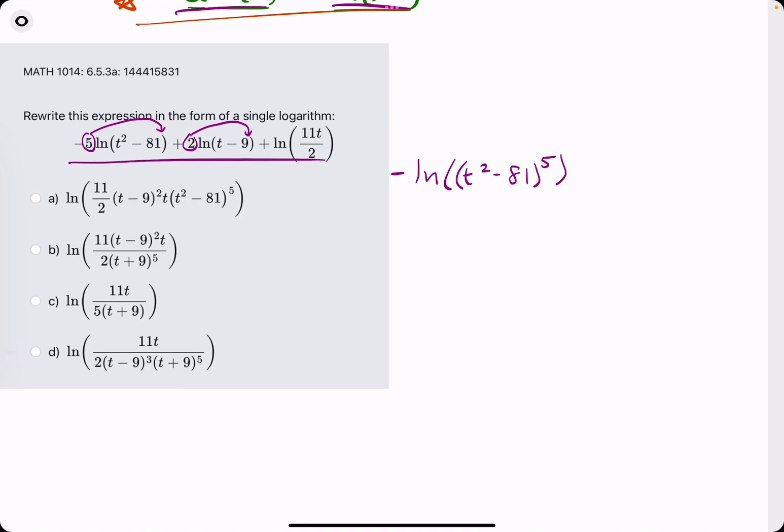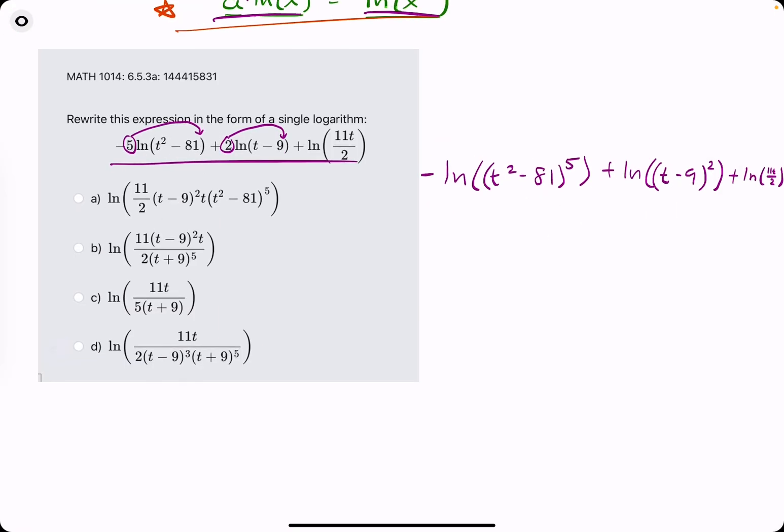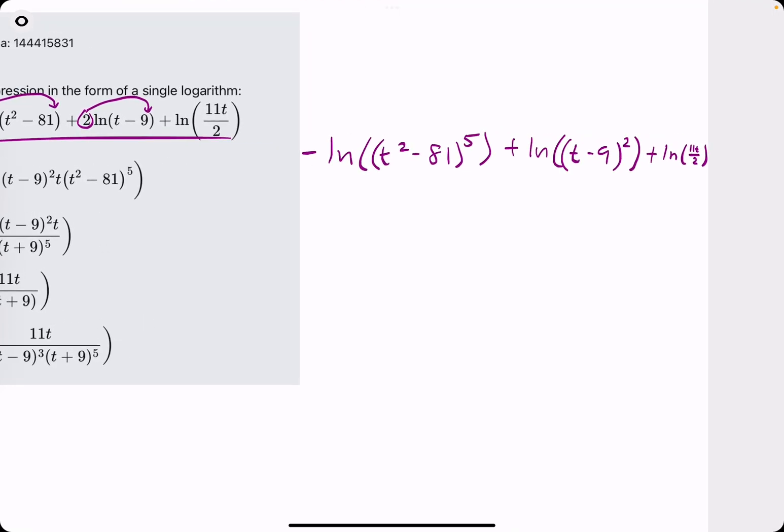You'll see why in the next step here. So, we bring up the 5 as the exponent of t² - 81. We keep going. We bring the 2 up as the exponent of t - 9. And then the last term just stays as is, 11t over 2.